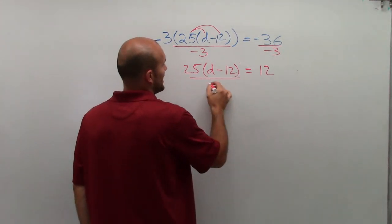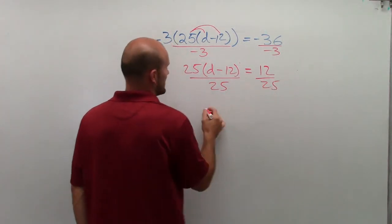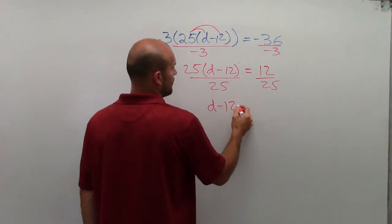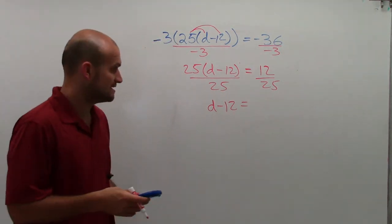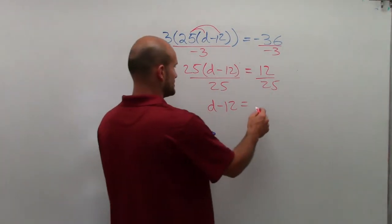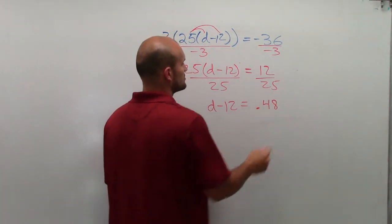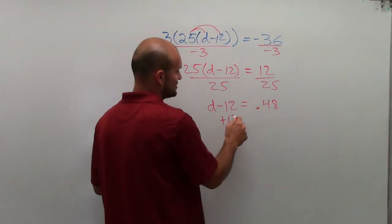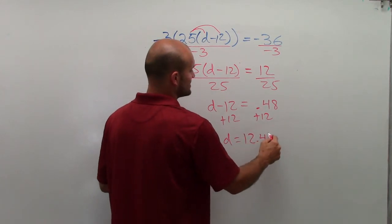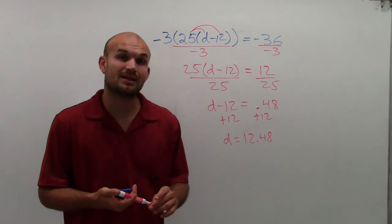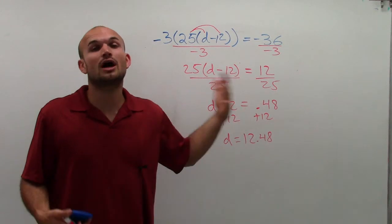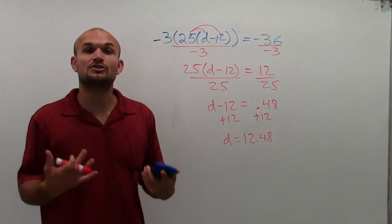Now I can undo by 25, so I'll divide 25 on both sides. That's going to go to 1 — 1 times d minus 12 is just d minus 12. And then I'll look at my calculator and do 12 divided by 25, keeping the decimal, which is 0.48. Then I'll add 12 to both sides, and you can see I get d equals 12.48. So there are two different ways: you can solve by using the distributive property, or you can use the division property of equality to undo the distributive property.